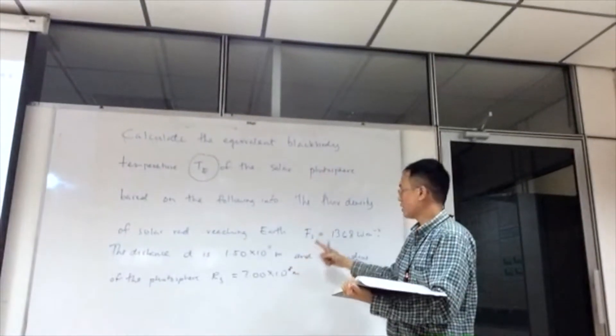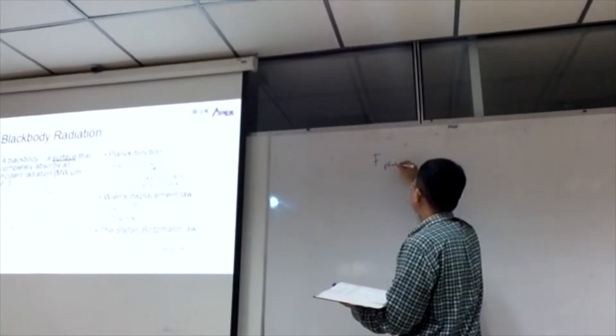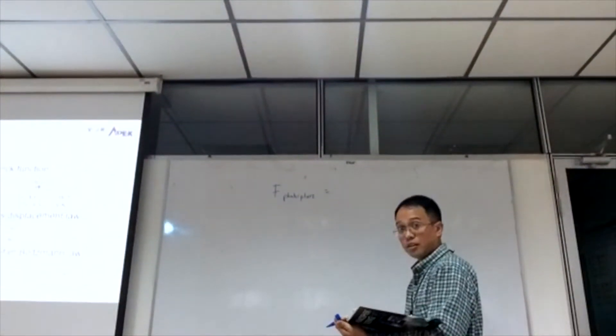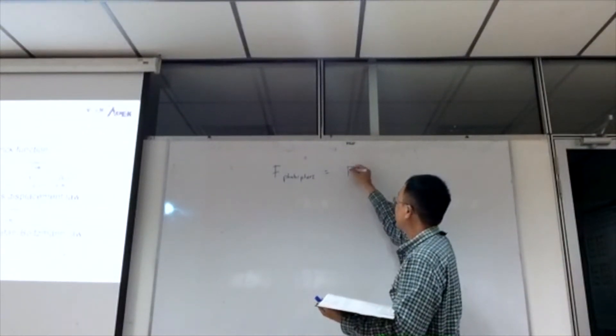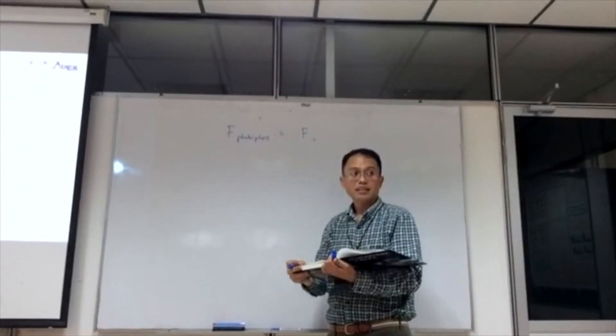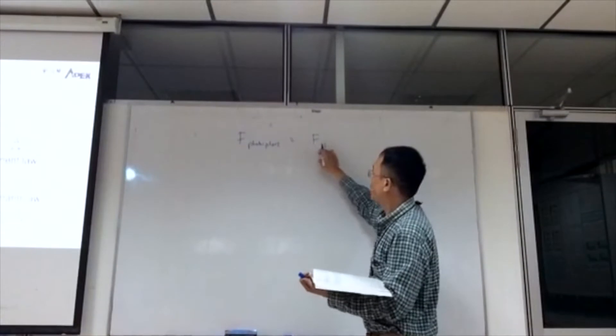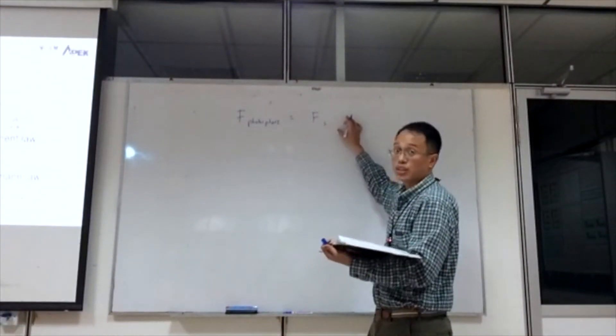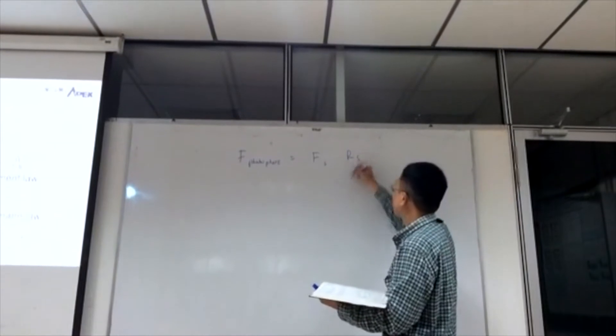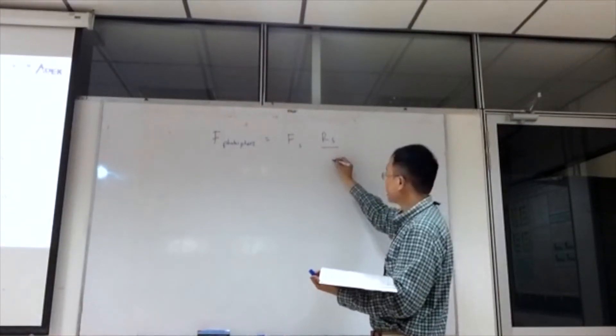So the strategy is first calculate the actual F. Once we calculate the actual F, then we back-calculate T. We want to calculate F at the photosphere, we don't know that, we just have F on Earth. So F photosphere equals F on Earth, but not exactly. This is definitely more than this one. So we know the relation between the F at the sun and the F on Earth is just based on a ratio of how far the sun is from the Earth. So that ratio is just the radius of the solar photosphere divided by the distance from the sun.